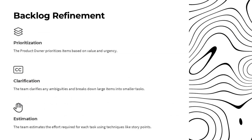Backlog refinement is a crucial process where we work together to ensure our product backlog is ready for the next sprint. The product owner starts by prioritizing the backlog items based on their value to the business and how urgently they need to be addressed. As a team, we clarify any ambiguities in the backlog items and break down larger items into smaller, more manageable tasks. Finally, we estimate the effort required for each task using techniques like story points to get a sense of relative complexity, resulting in a clear, prioritized, and well-understood backlog going into the next sprint.